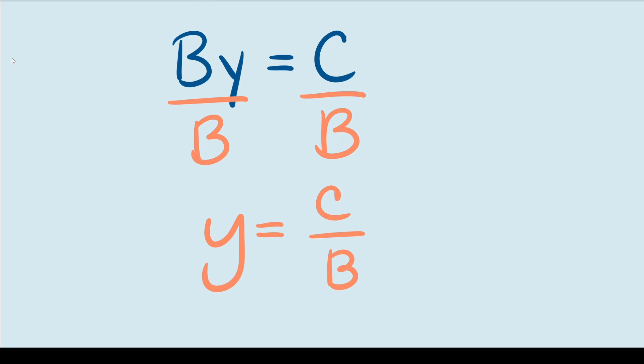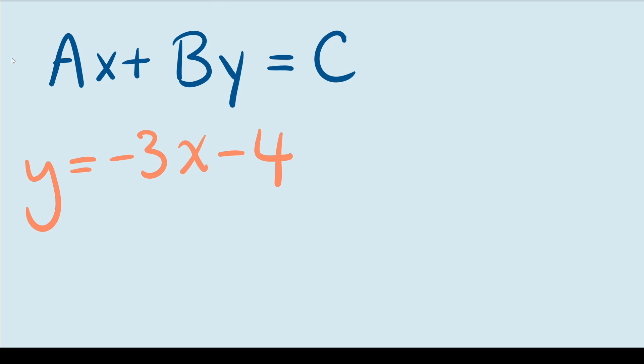Now let's take a look at a few examples. Let's say that you're given this linear equation in slope intercept form. First let's put it into standard form. To do that, all we need to do is move this x term over here to the left hand side with the y term. If we do that, we get 3x plus y is equal to negative 4.